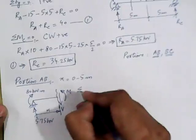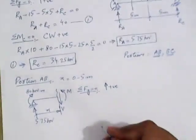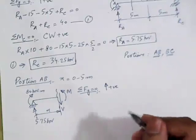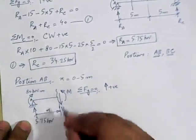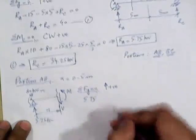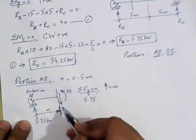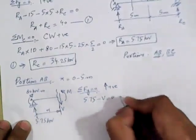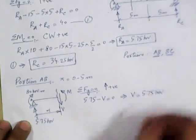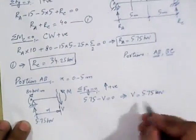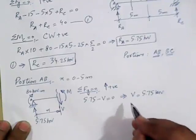Now we write down the equation for shear force. For shear force, we apply ΣFy = 0, with upward forces taken as positive. Starting from point A: we have RA = 5.75 kN acting upward, so positive 5.75. The point moment does not appear in this force equation. So the shear force equation for portion AB gives V = 5.75 kN. There is no variable in this equation, so the shear force is constant throughout portion AB.